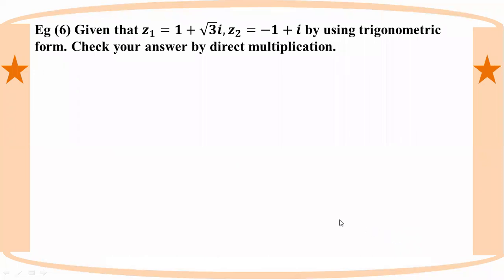Given that z1 equals 1 plus root three i, and z2 equals minus one plus i. These are complex numbers. We need to find the product by using the trigonometric form.